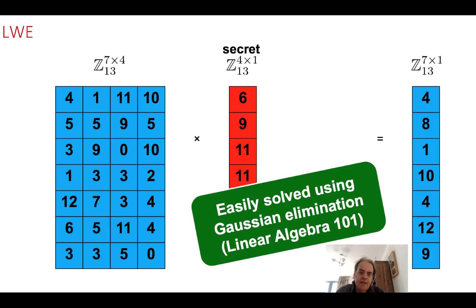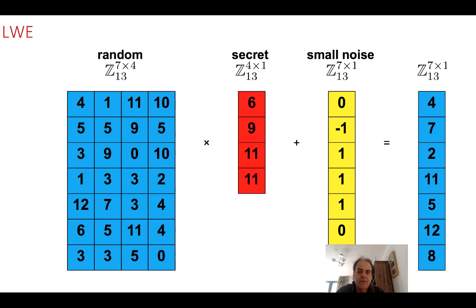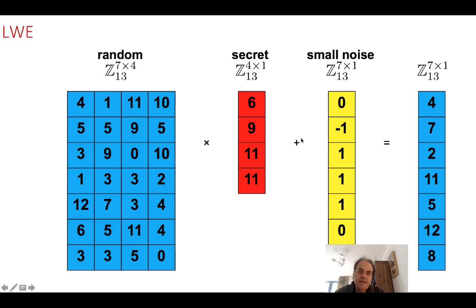That's a relatively easy problem. In post-quantum cryptography we want a difficult problem. The problem we now have is that we add some noise. In this case we multiply our matrix and then we add noise — for example, 4 times 6 plus 1 times 9 plus 11 times 11 plus 10 times 11, then we add 0, all done mod 13. The problem is made a lot more difficult by adding this small amount of noise, and it's actually quite difficult to find out what the secret was and what the noise is.